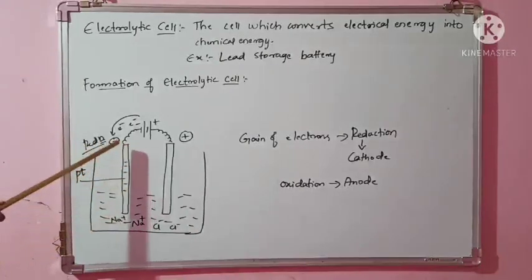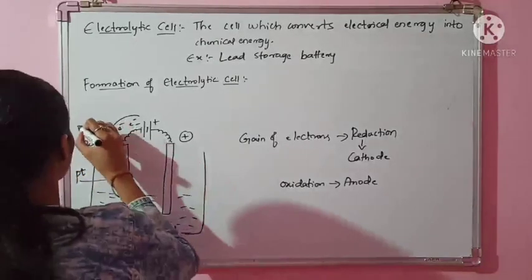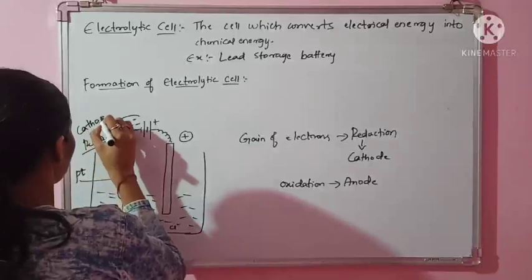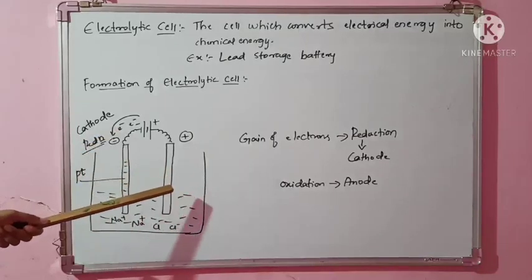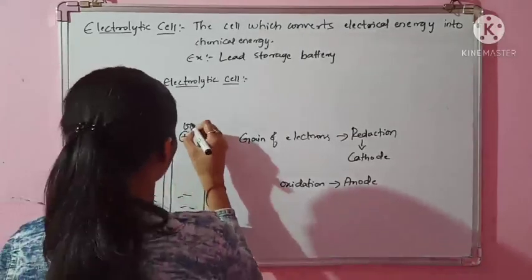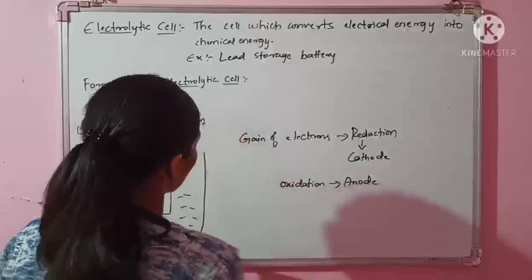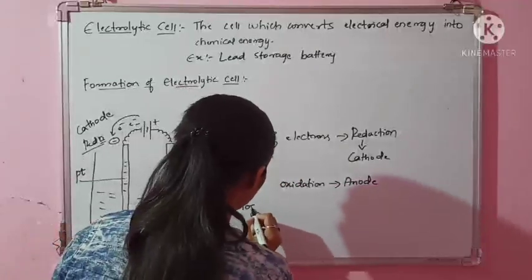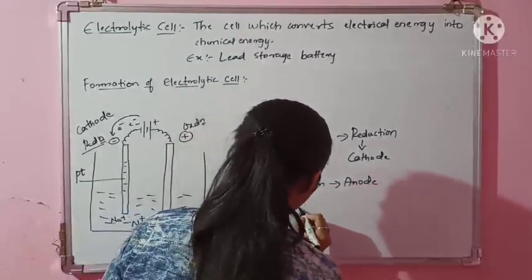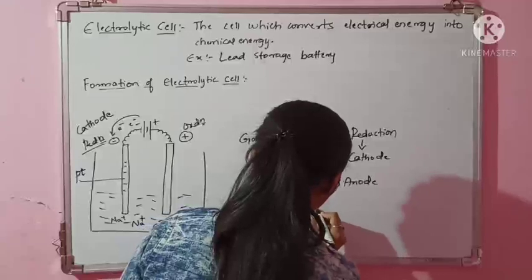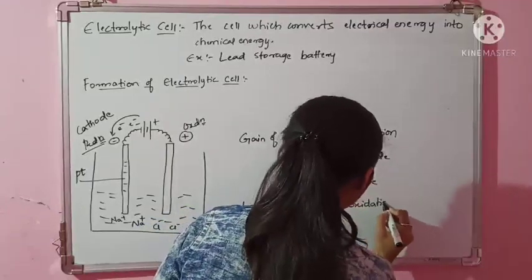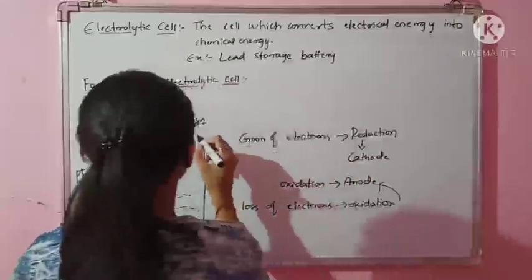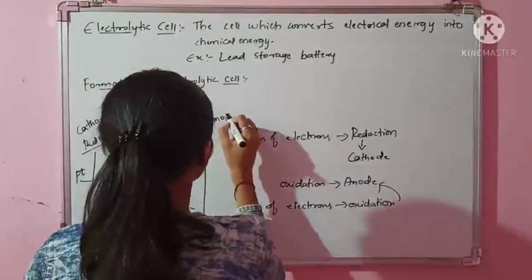Since reduction is taking place at the cathode, definitely oxidation will be taking place at the other electrode. Loss of electrons is oxidation, and oxidation always happens at the anode. So the right electrode, which has lost electrons and is deficient of electrons — shown with a positive sign — is treated as the anode.